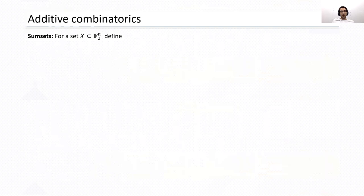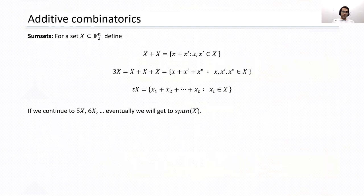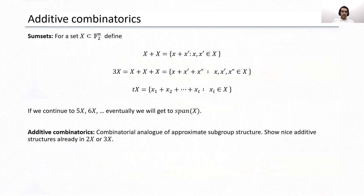Here's where we can use some techniques from additive combinatorics. Let's review some basics and define a sumset. Suppose we have a set X which is a subset of F_2^n. We define X plus X as the set of all possible elements x plus x', where x and x' both belong to X. Similarly, we can define X plus X plus X and denote it by 3X, and do the same for any constant T. If we continue constructing these sumsets, we eventually get to the span of set X. The goal of additive combinatorics is to show some nice additive structures already in 2X or 3X.